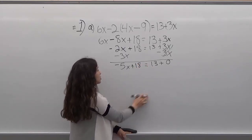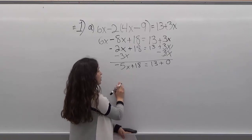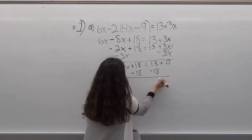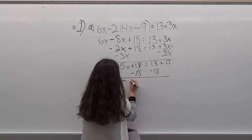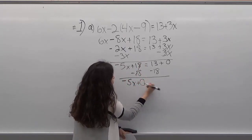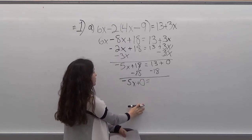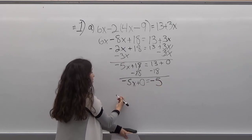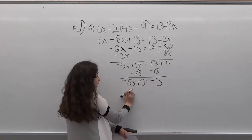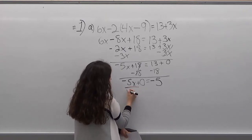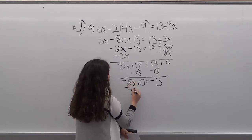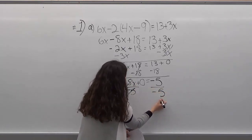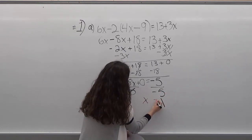So now, since you want to get x by itself, you're going to subtract 18 on both sides, which gives you minus 5x equals 13 minus 18, which is minus 5. Now you have to divide negative 5x by negative 5 to get x by itself, and you do it on both sides, so minus 5 divided by minus 5 gives you 1. So that's your solution.